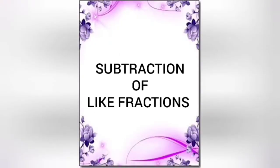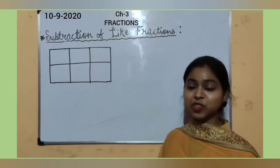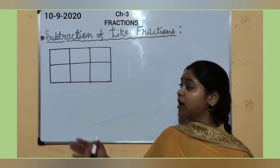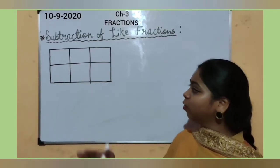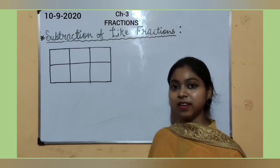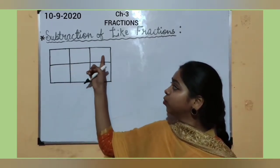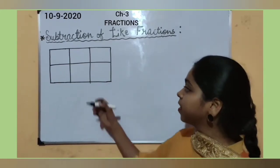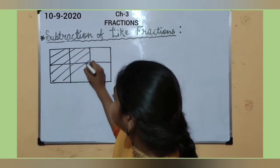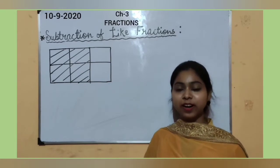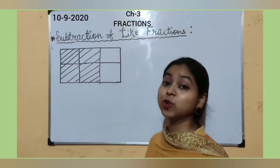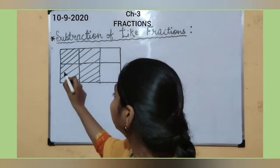Now let's understand the topic: subtraction of like fractions. Let's understand this concept through an example of a chocolate. Now our mother has got a chocolate. Can you observe how many total parts are there in this chocolate? 1, 2, 3, 4, 5, 6. So there are 6 parts in this chocolate. Out of 6 parts, she has given 4 parts to her first kid, that is Rohan. The part given to Rohan is 1, 2, 3, 4 — so 4 parts out of 6 total parts.